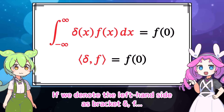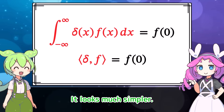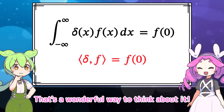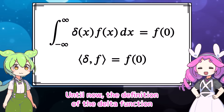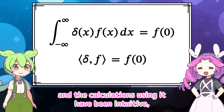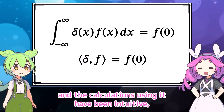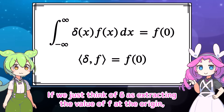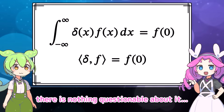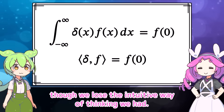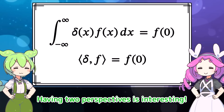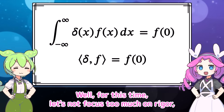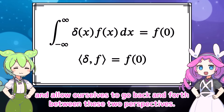If we denote the left-hand side as bracket delta f, it looks much simpler. This is almost like delta extracting the value of f at the origin. Until now, the definition of the delta function and the calculations using it have been intuitive but somewhat questionable in terms of mathematical rigor. If we just think of delta as extracting the value of f at the origin, there is nothing questionable about it, though we lose the intuitive way of thinking. Having two perspectives is interesting. For this time, let's allow ourselves to go back and forth between these two perspectives.